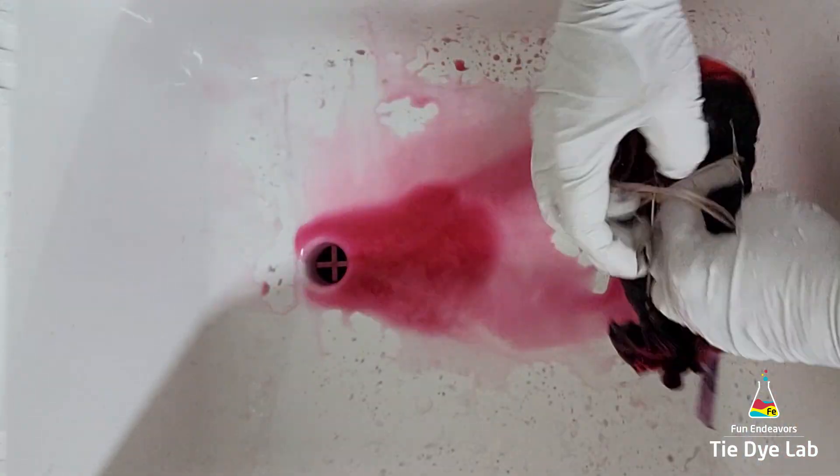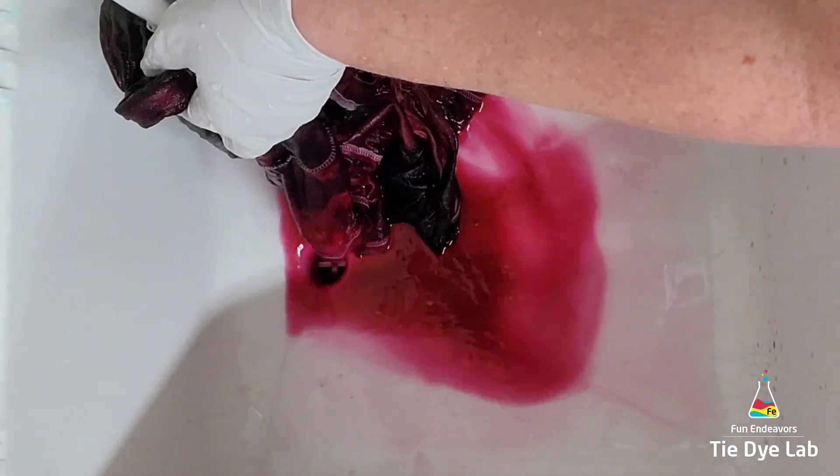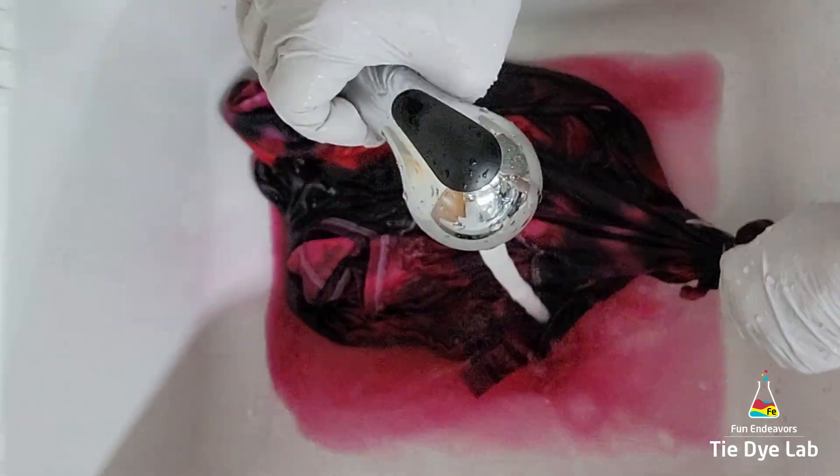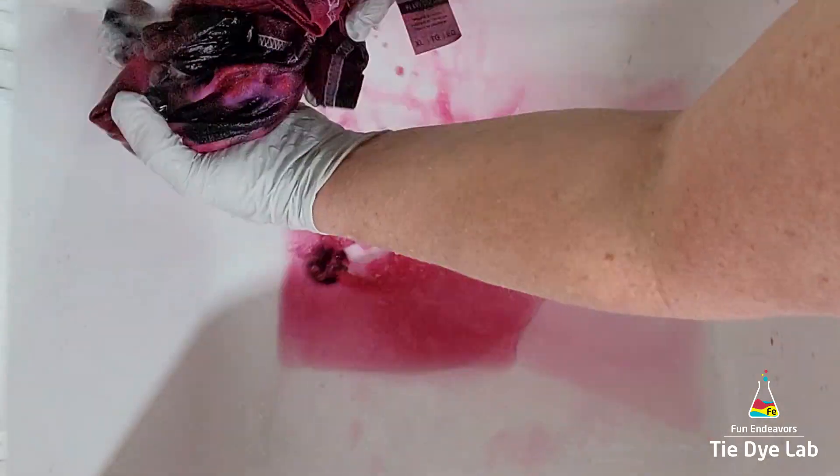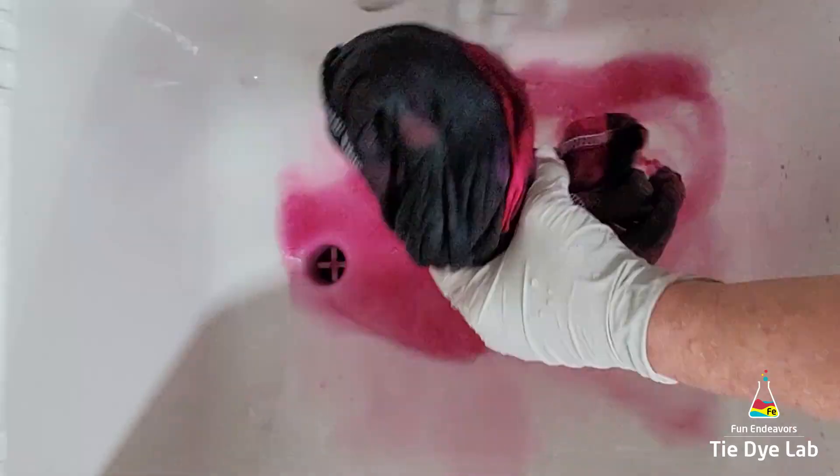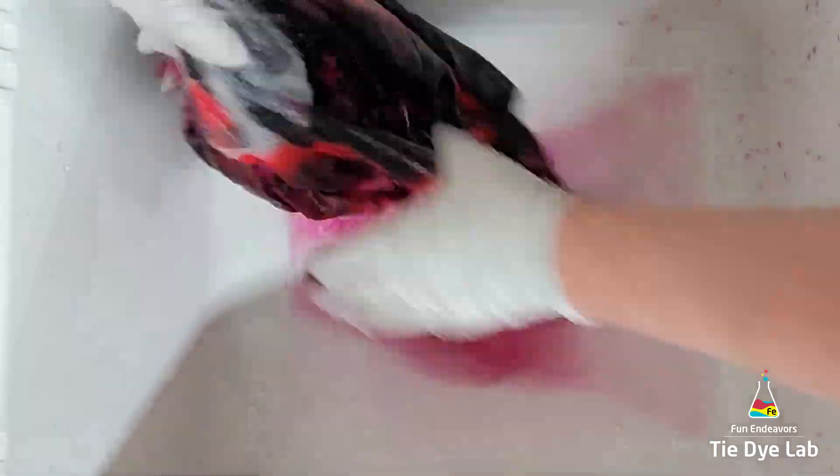After a while I decided to soak the shirt to get out the excess dye. So I ran some hot water in my utility sink, added a little bit of Blue Dawn dish detergent, and allowed the shirt to soak. After the water cooled I changed it out and continued the soaking process until the water was almost clear.